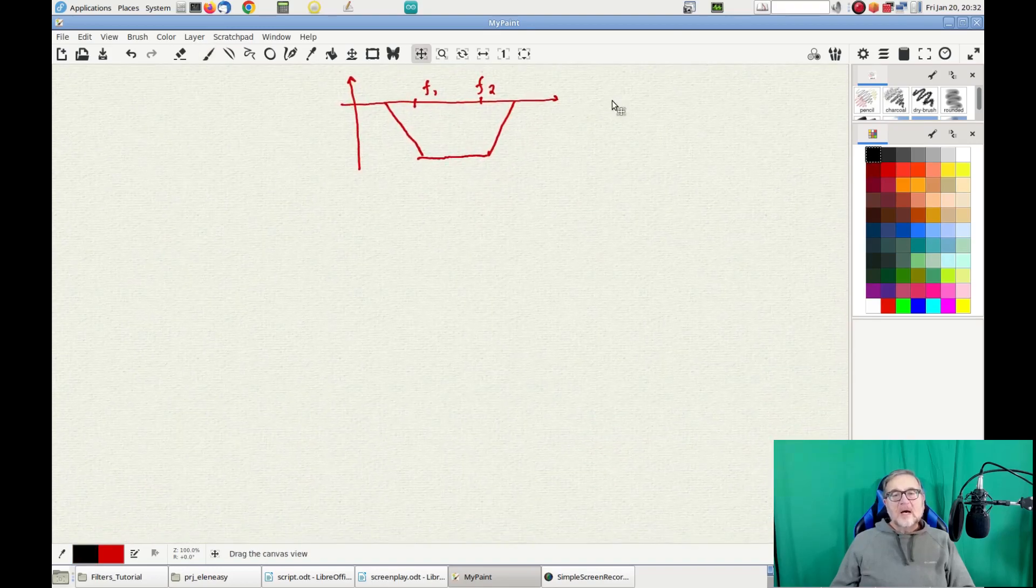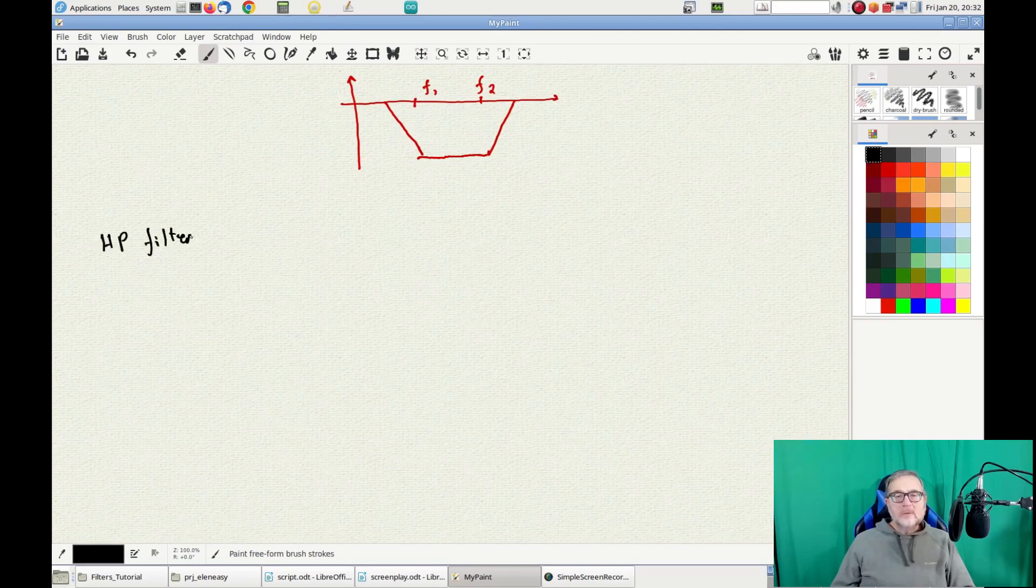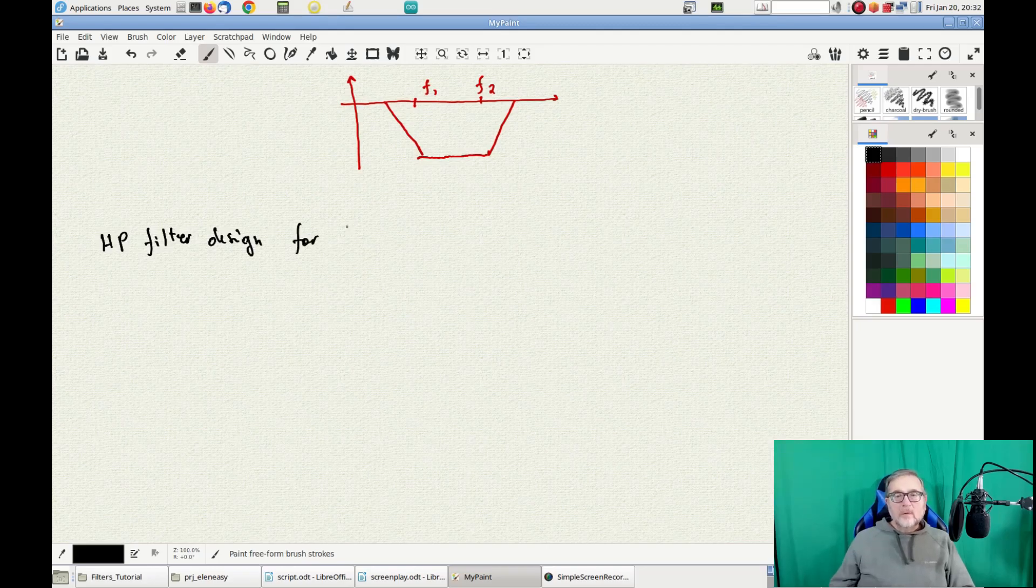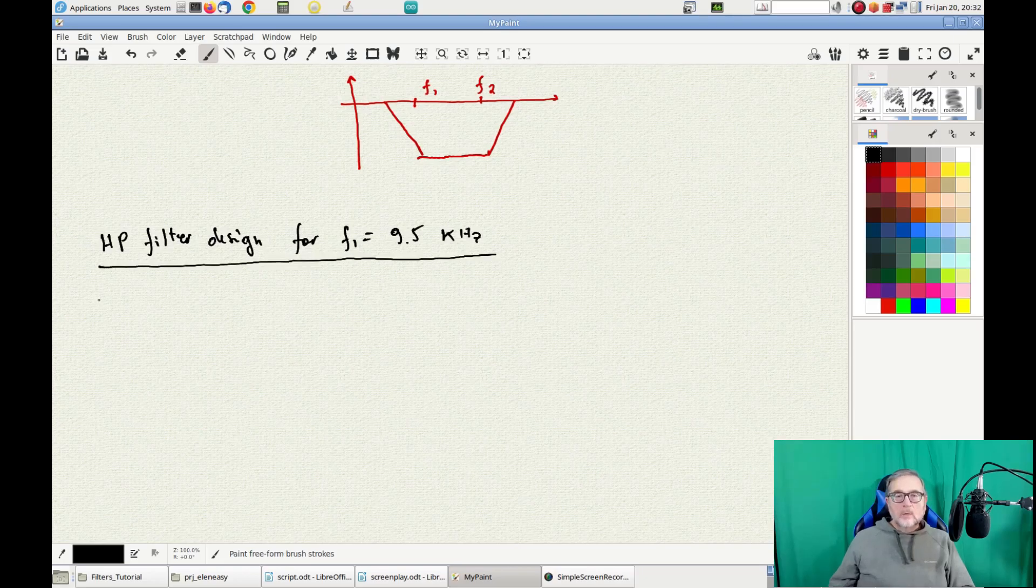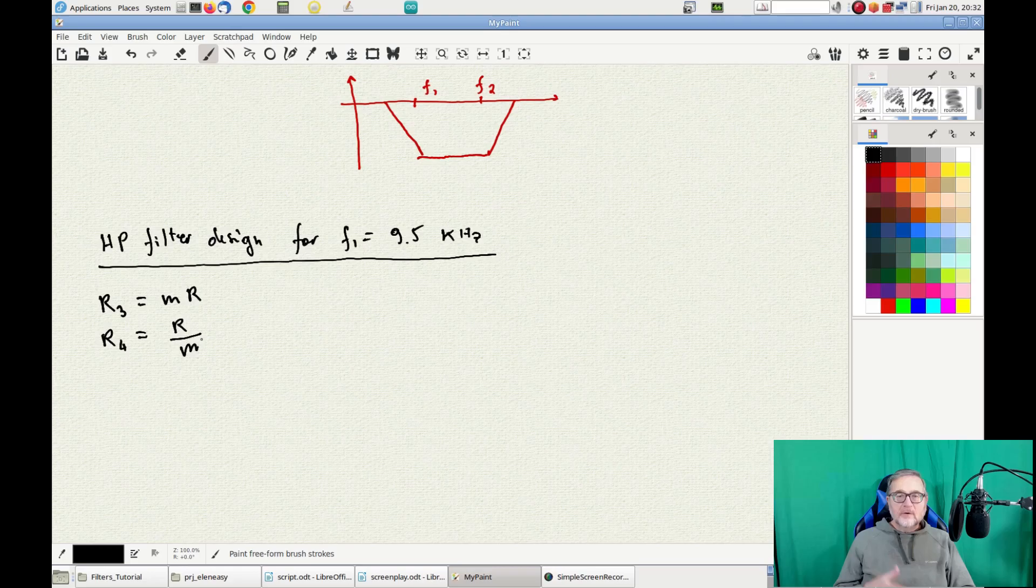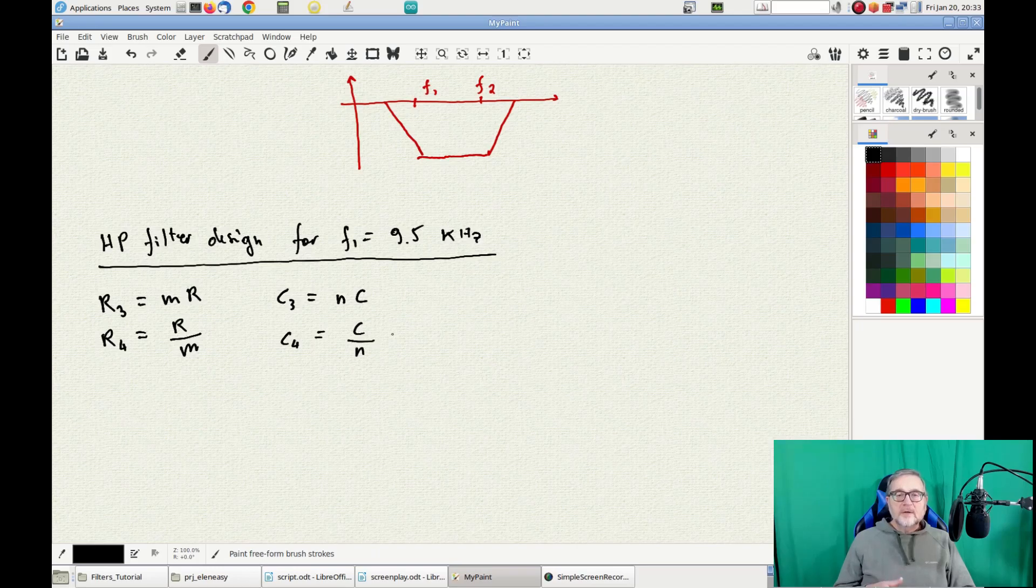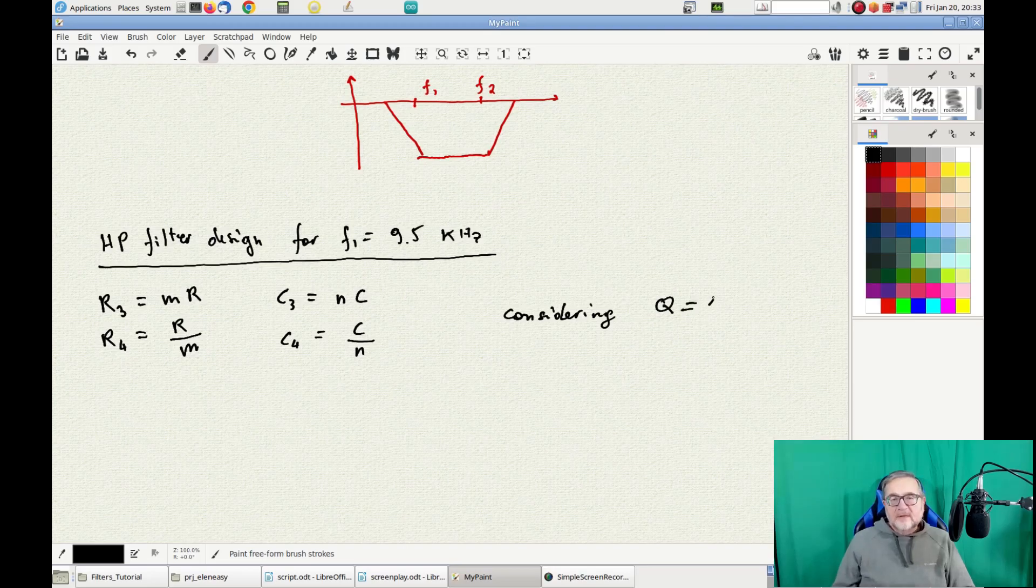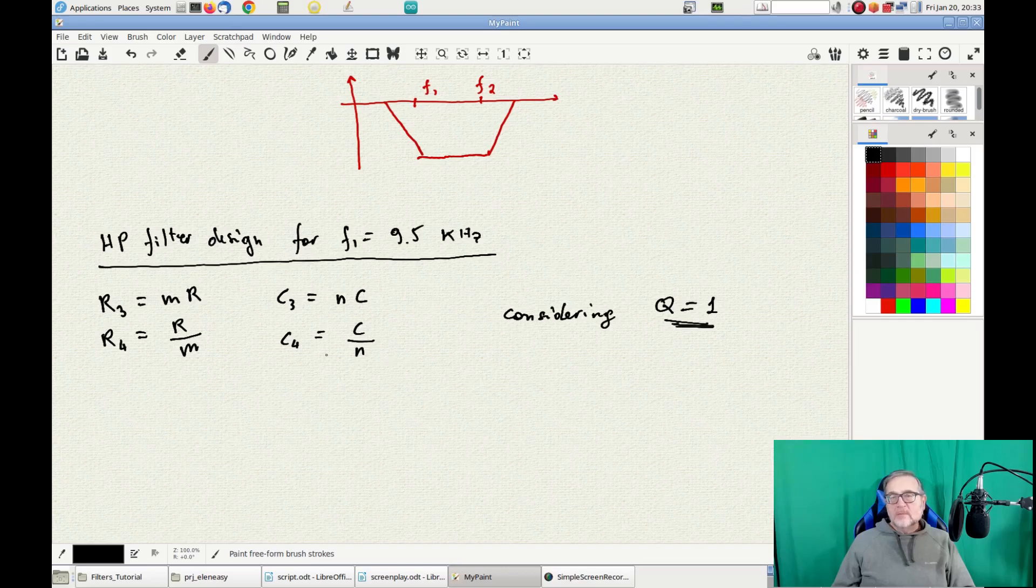Let's now design the high-pass filter with cutoff frequency F1 equals 9.5 kHz. We will follow exactly the same procedure we have seen in the video on Sallen-Key high-pass filters. We therefore define two intermediate variables M and N, such that R3 equals M*R, R4 equals R over M, C3 equals N*C, C4 equals C over N. Since we are aiming for a band-stop filter, we want smooth edges of the Bode diagram, and we want the highest possible slope, and for that we need to use a Q factor of 1.